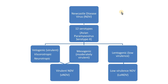Newcastle disease virus has many serotypes, and serotypes mean that there are slight differences in the proteins that result in different antibody responses. The most common serotype that causes the most severe disease and mortalities is Avian Paramyxovirus serotype 1. However, for simplification, all serotypes were divided into three groups depending on the disease severity they cause.